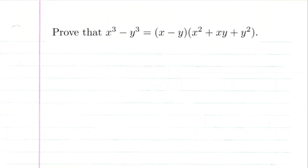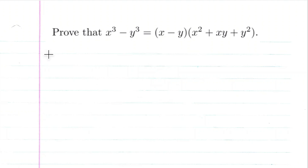Today we're going to be proving this identity from Michael Spivak's Calculus: x cubed minus y cubed is equal to x minus y times x squared plus xy plus y squared. This is a continuation of problem number one in Michael Spivak's Calculus, so we've done the previous three, and this is sort of like problem number two. So, the proof.